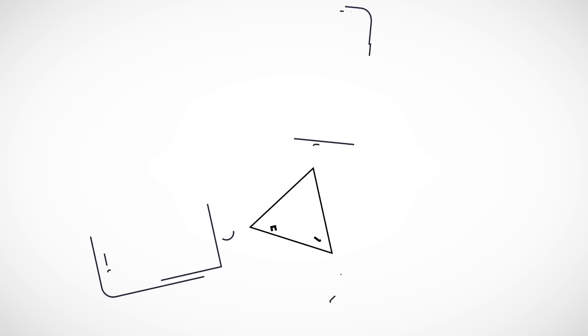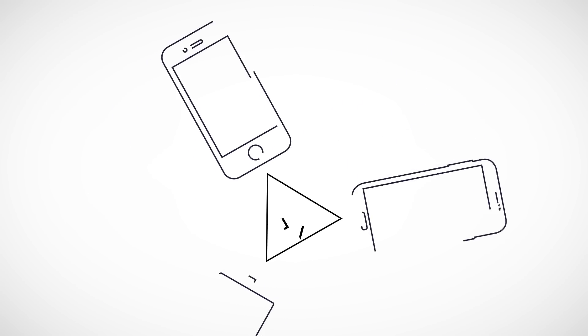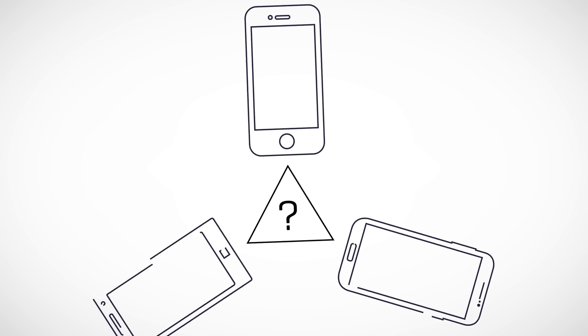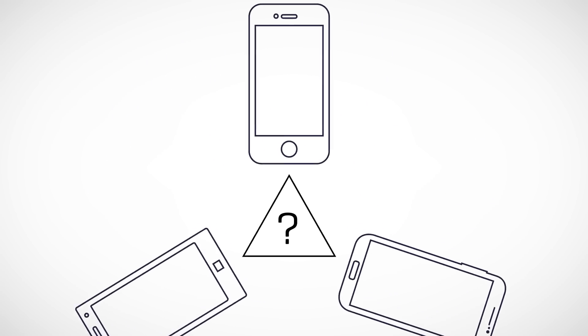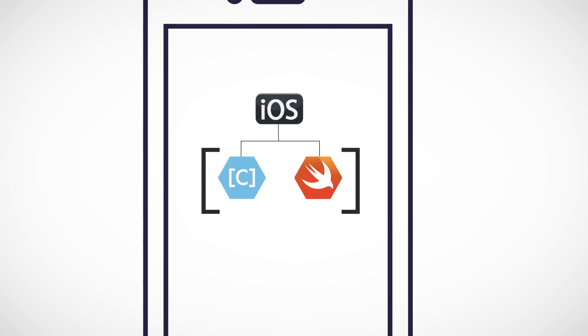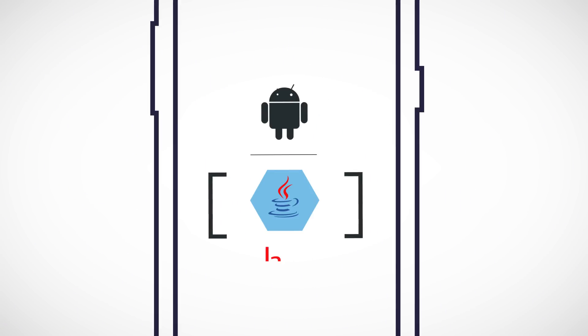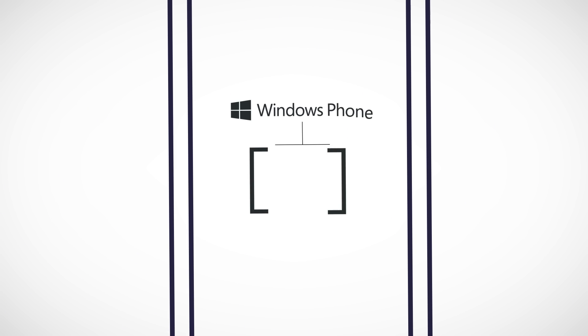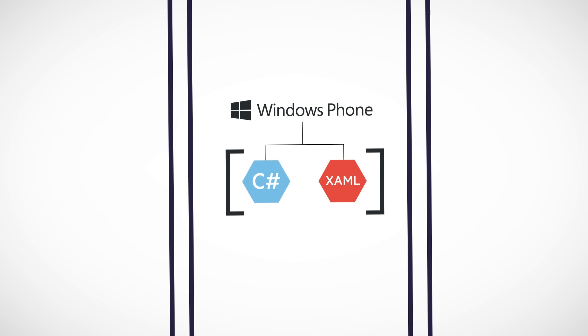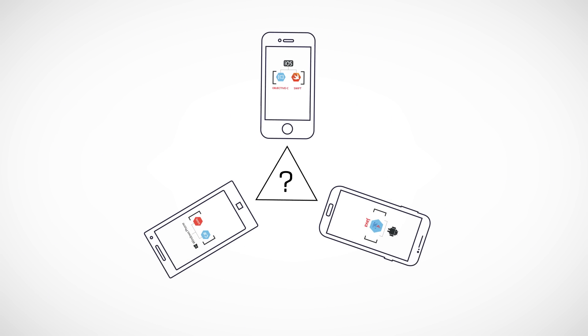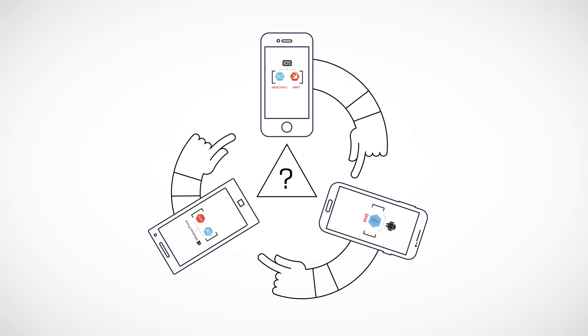One of the challenges for developing mobile platforms is learning the different platforms. With iOS you have to learn Objective-C or Swift. With Android you need to learn Java. With Windows Phone you need to learn C-sharp and XAML. You have to develop a solution for each platform.